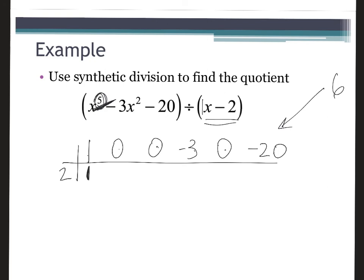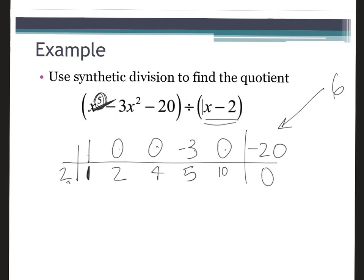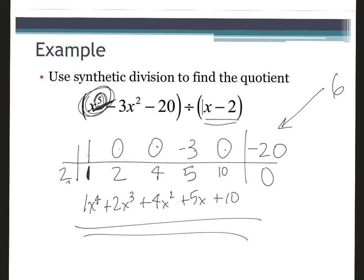Bring the first number down, then multiply and get two, add. Multiply and get four, add. Multiply and get eight, add. Multiply and get ten, add. Multiply and get twenty — add and get zero. That's a remainder of zero, which means it's a factor and divides in evenly. The coefficients of the depressed polynomial give the quotient: starting from x to the fifth, this becomes one x to the fourth plus two x to the third plus four x squared plus five x plus ten.